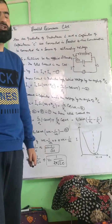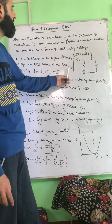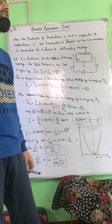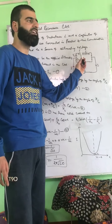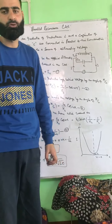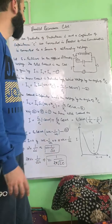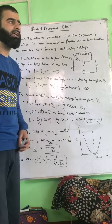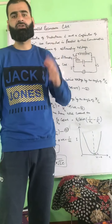Since it is a parallel combination, the voltage across both components remains the same. Only the current will change through these two components. The total current I will be divided into IL — the current through the inductor — and IC — the current through the capacitor. So the total current I = IL + IC.